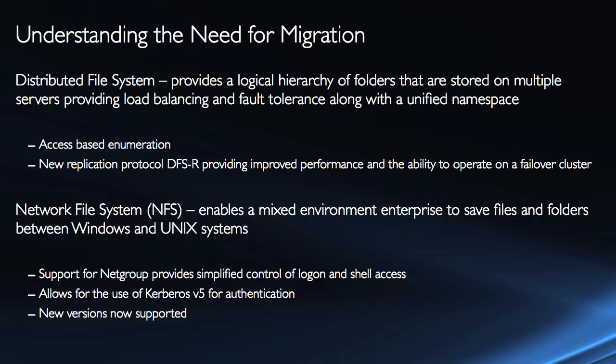What are some of the new features in 2008? In 2008, RTM and R2 provided something known as access-based enumeration. This basically means that you'll only see the folders for which you have permissions. That's very beneficial because it minimizes the hassle of users seeing folders they can't actually access. We also have a new replication protocol, DFSR, that provides improved performance and the ability to operate even when DFS is implemented on a failover cluster.